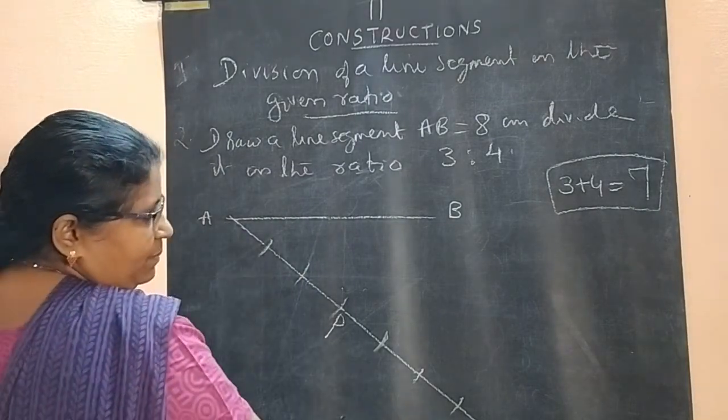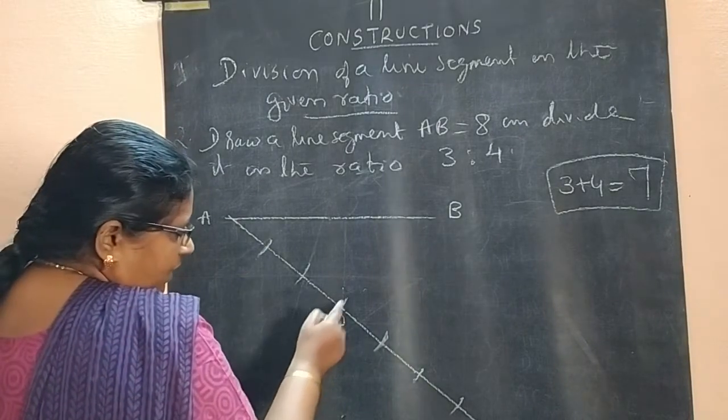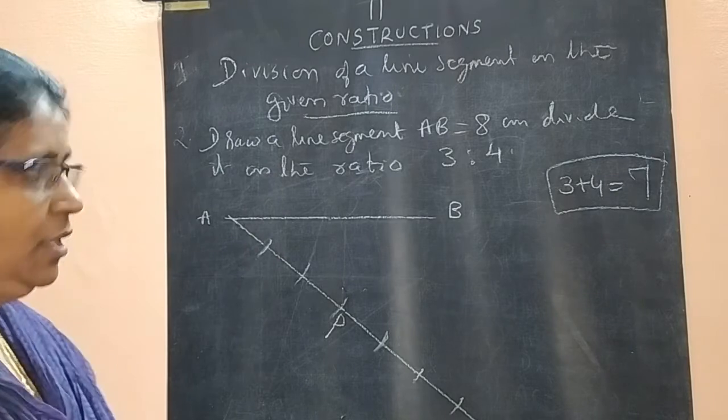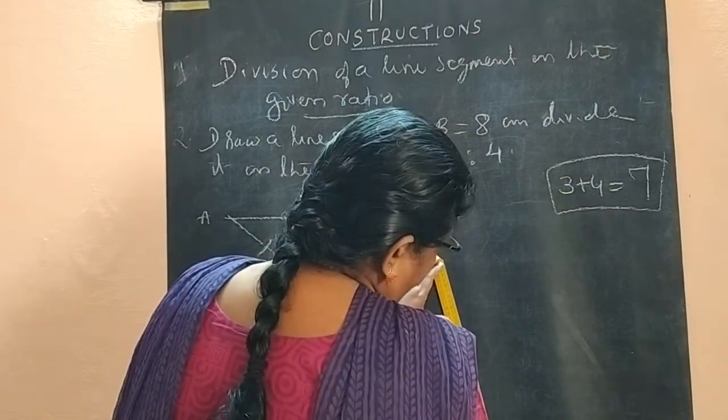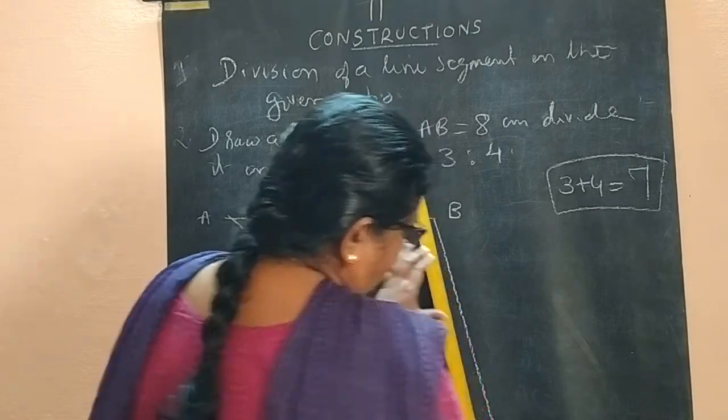Total 7 parts. How we got? 3 plus 4. Third part mark. Next fourth part mark. Then you join B and Q. Last point and Q you join.